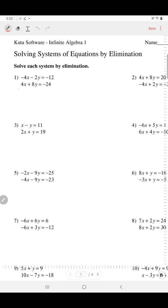In number 1, we can easily eliminate the variable x by adding the equations. When you add opposites, they cancel. We add the other terms: negative 2y plus 8y is 6y, and negative 12 plus negative 24 is negative 36. Divide by 6. Y equals negative 6.